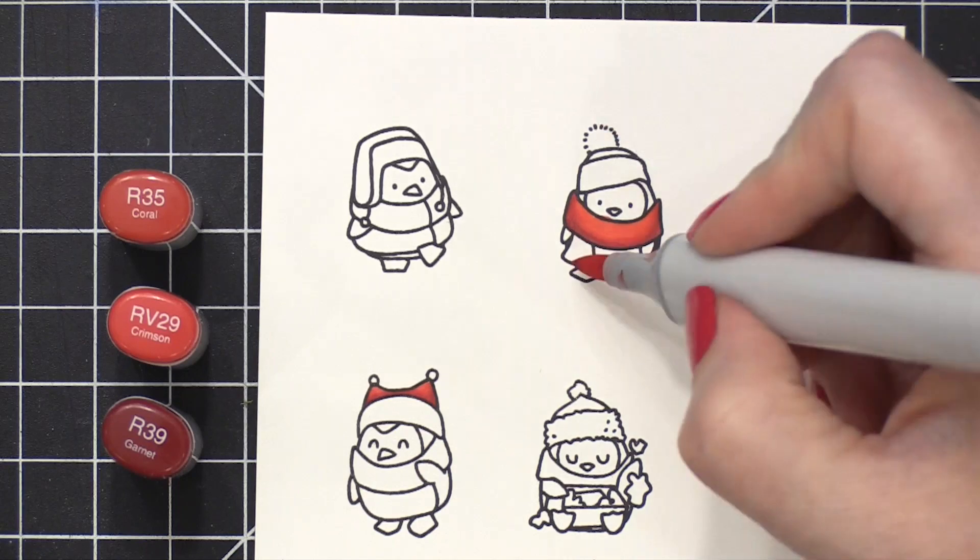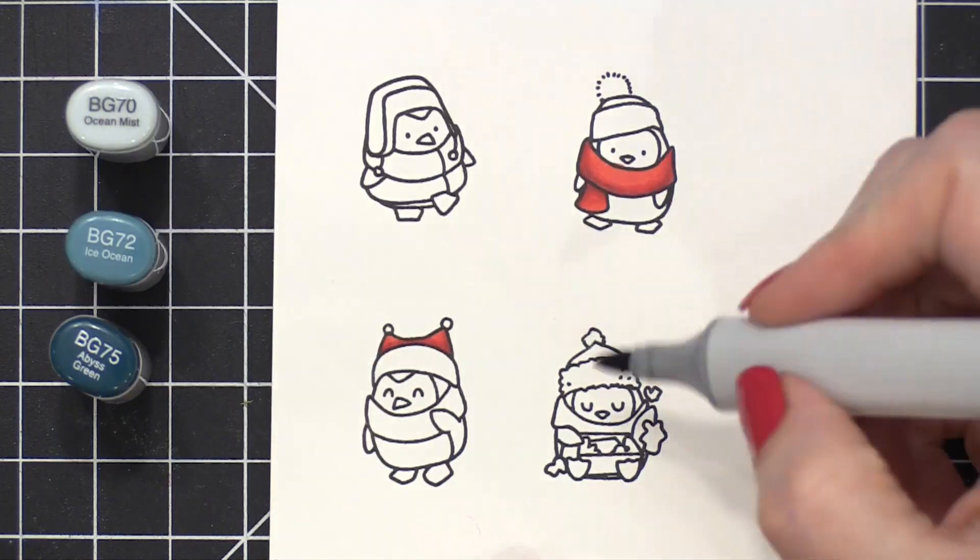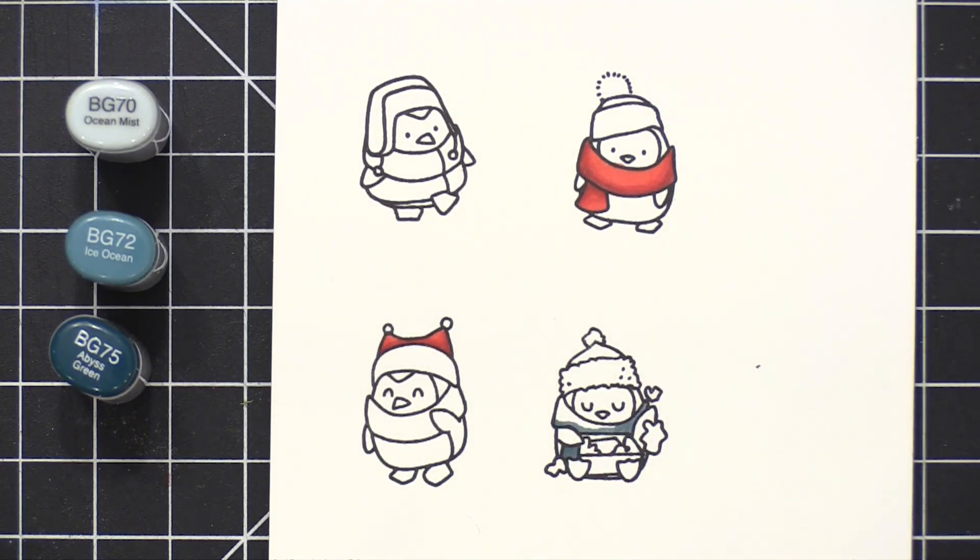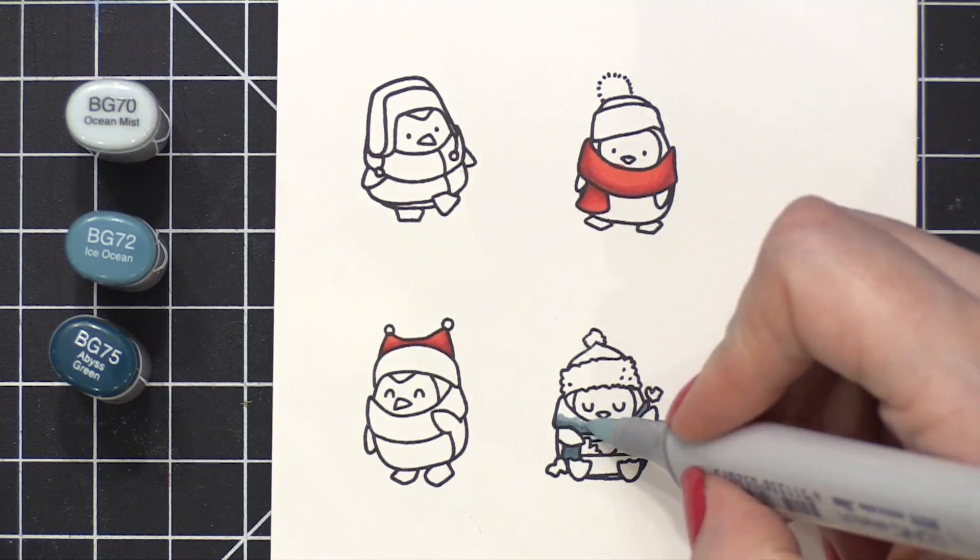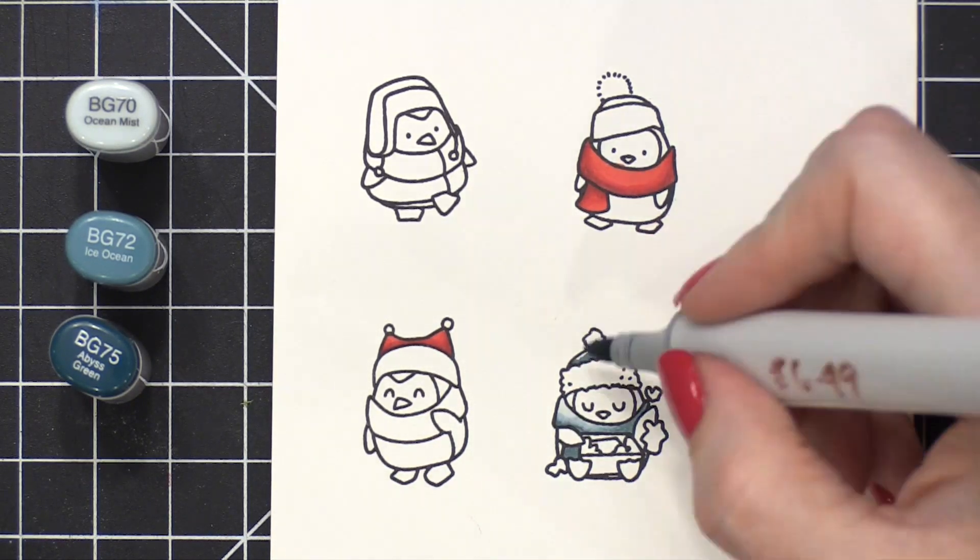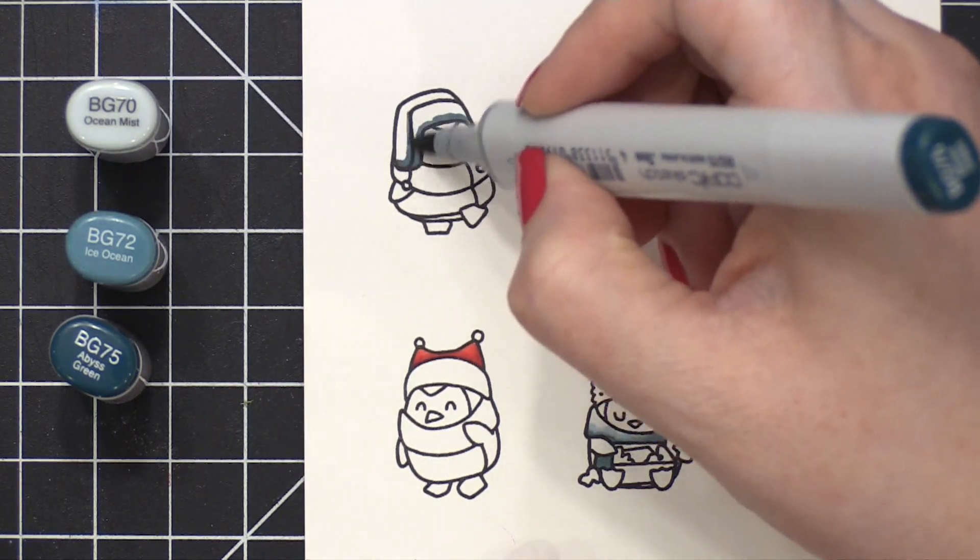So now I'm using some Copic markers and doing some coloring. I'm using a very limited color palette, mostly just reds, kind of like a bluish green, green, and then just the penguins themselves. So I'm going to turn on a little bit of music so you can continue watching the coloring. And I'll be back after I've trimmed them out with my scissors.